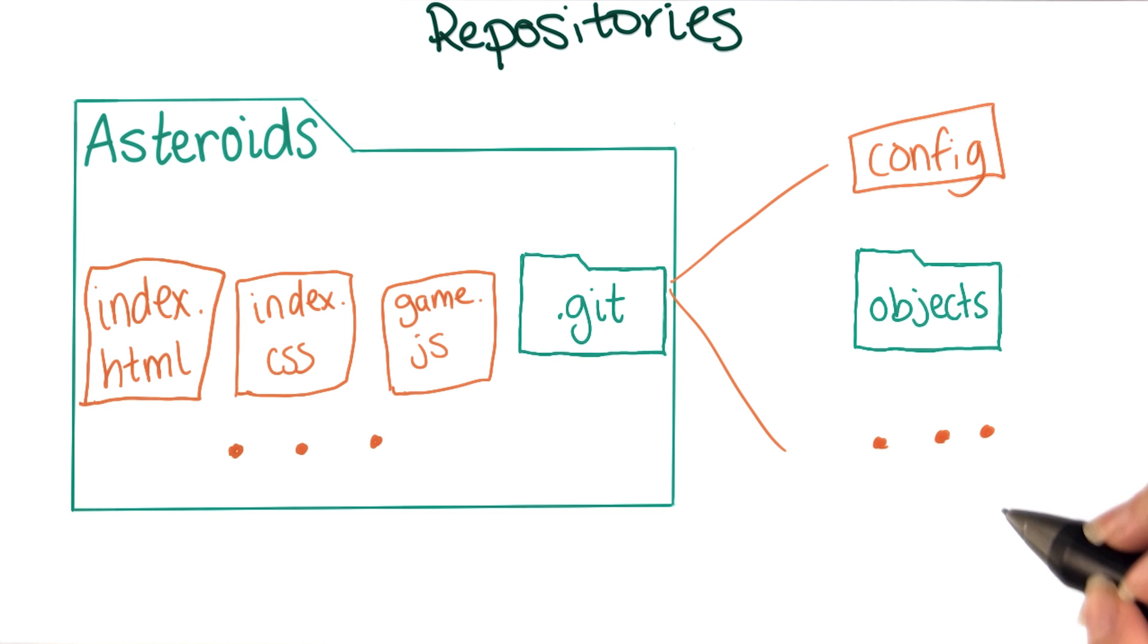If you want to start from scratch, you'll need to explicitly tell Git that you want to make a new repository. In the next video, Caroline will show you how that works.